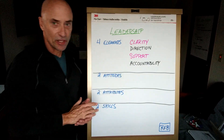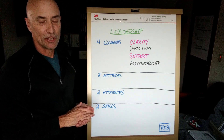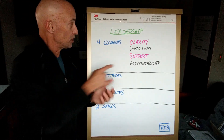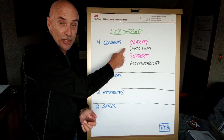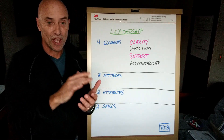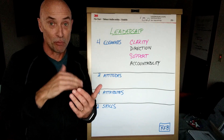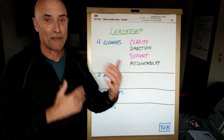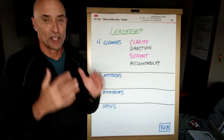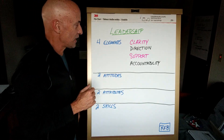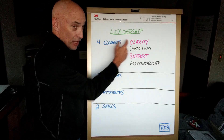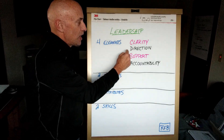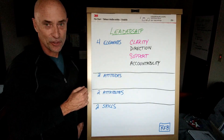The last piece that the leader supplies is accountability. Accountability, properly understood, is simply: we know what the goals are — based on clear direction and clear expectations — and we have some way of measuring progress towards those goals, and we're observing, and then having dialogue about it. So the essential four pieces the leader brings are clarity — first internally — and then direction, support, and accountability to others.